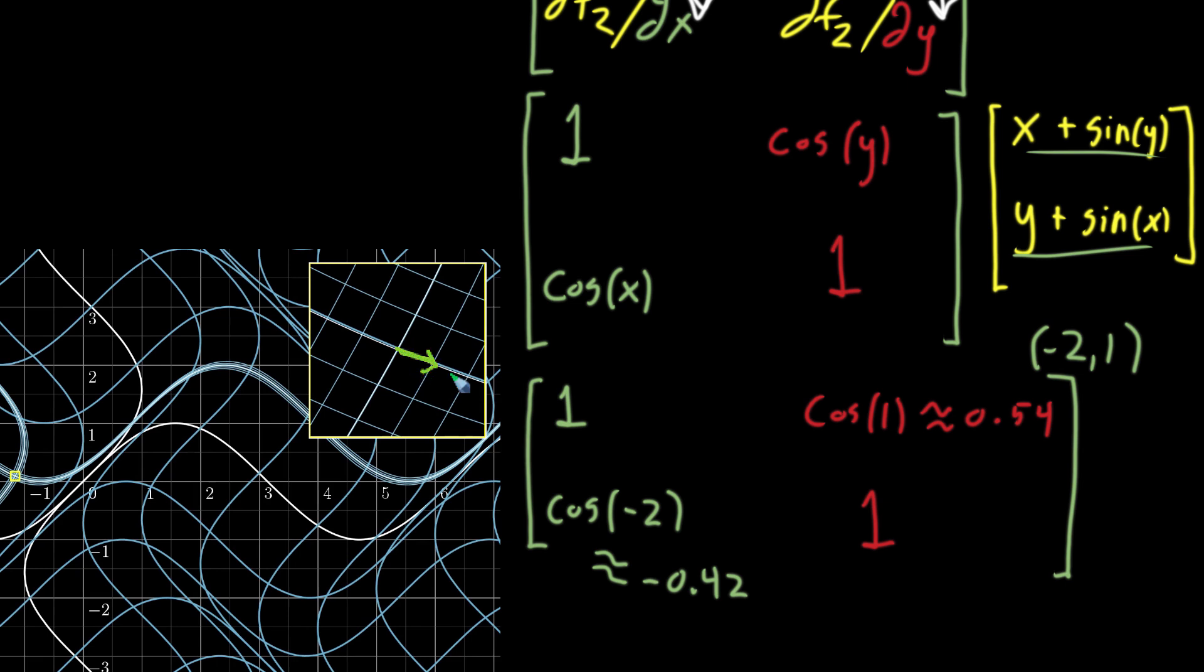does look like it has coordinates, 1 and negative 0.42, right? It's got this rightward component that's about as long as the vector itself started, and then this downward component, which I think that's, you know, pretty believable that that's negative 0.42.